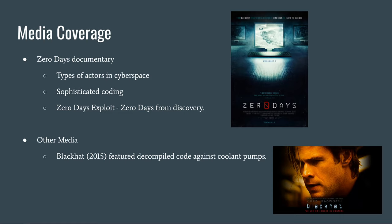In terms of media coverage, the Zero Days movie gave an overview of cyberspace terms and commonly used terminology. The terminology included types of actors in cyberspace: cybercriminals looking for quick money, activists engaged for a cause, and nation states usually engaged against infrastructure and looking for sensitive data. The Zero Days movie also described Stuxnet as highly sophisticated and noted that four zero-day exploits were found. Other media includes decompiled Stuxnet code, with notable use at Black Hat in 2015 where the code was depicted attacking a nuclear facility.